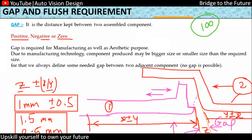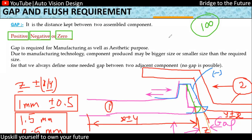The gap between two assembled components can be positive, negative, or zero. A positive gap means there is an existing space between the parts. Zero gap is a touching condition. A negative gap means the parts are intersecting — intersection is only possible with soft parts. So negative would be an intersection, zero would be touching, and positive would be the existing gap.